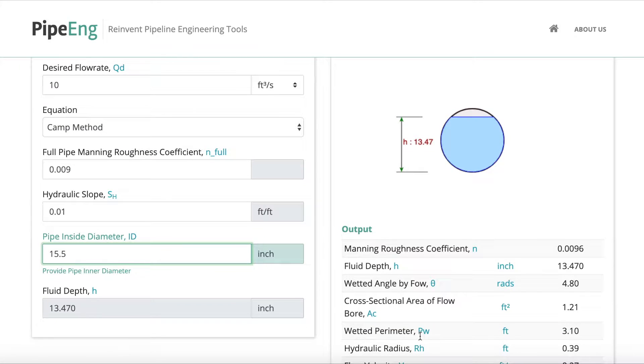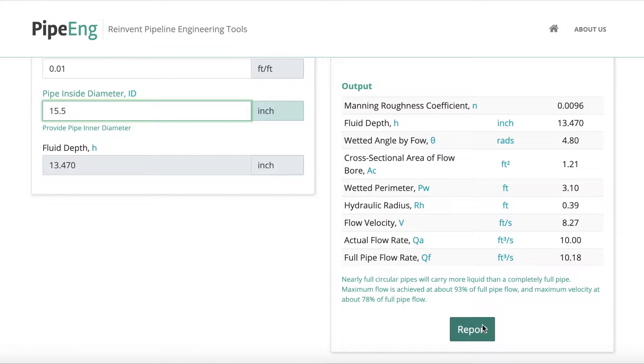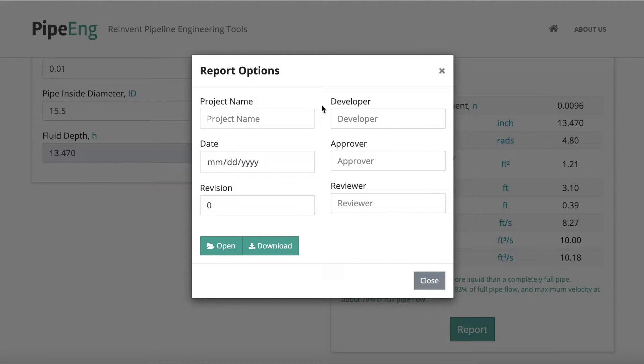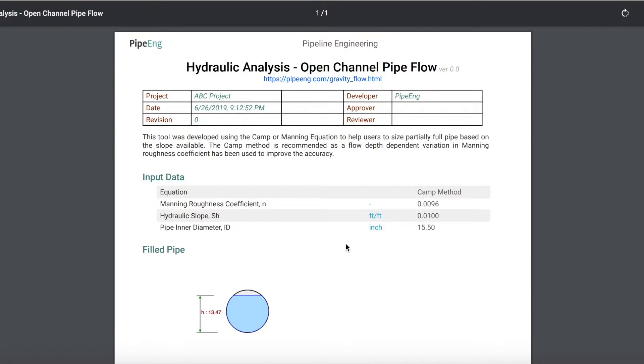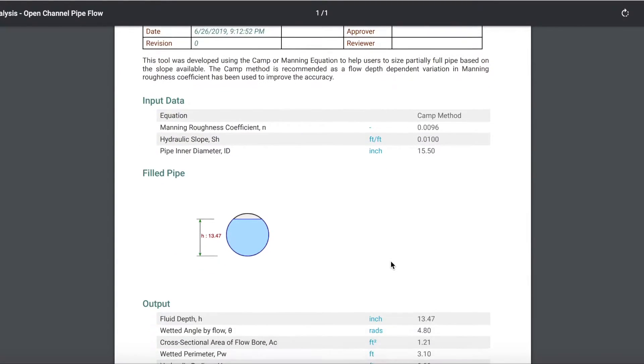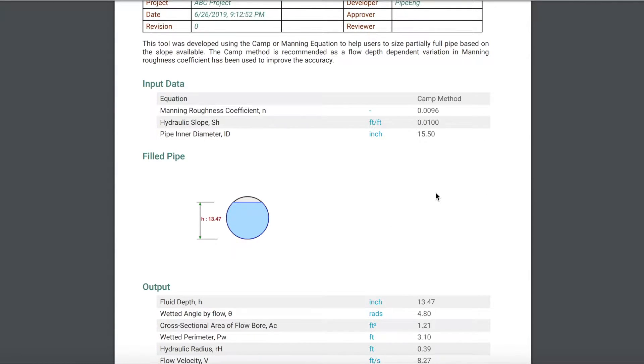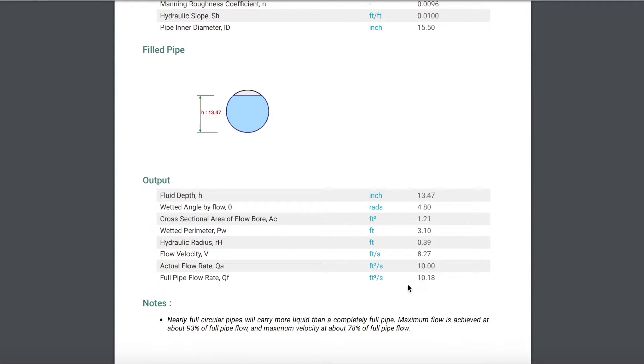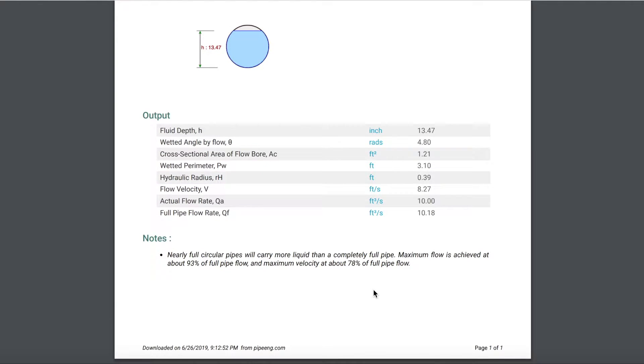And of course, when everything is done, you can also generate a PDF report, put in your typical information for your project dates, revision, and who developed it, who reviewed it. And then you can have a PDF report generated based on your inputs, the calculation results, and you can save it.